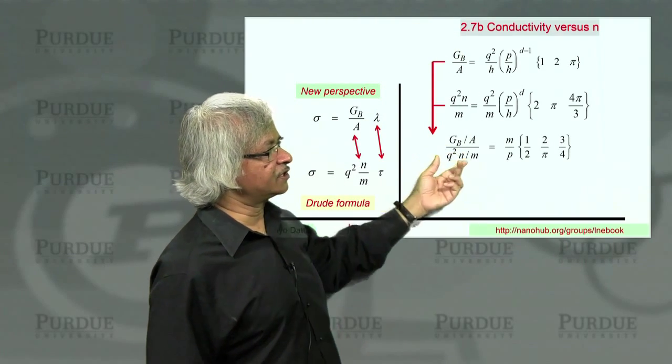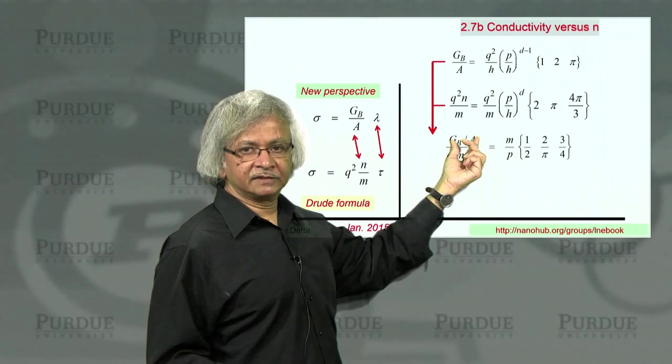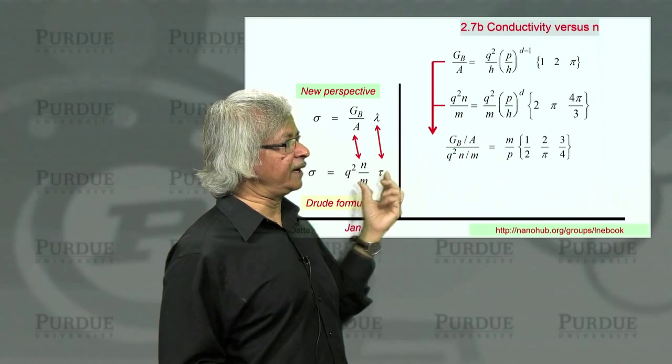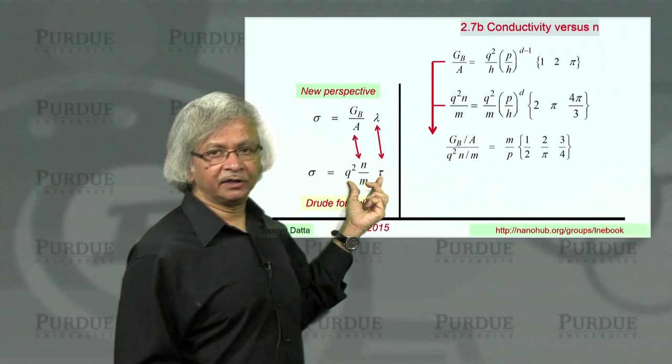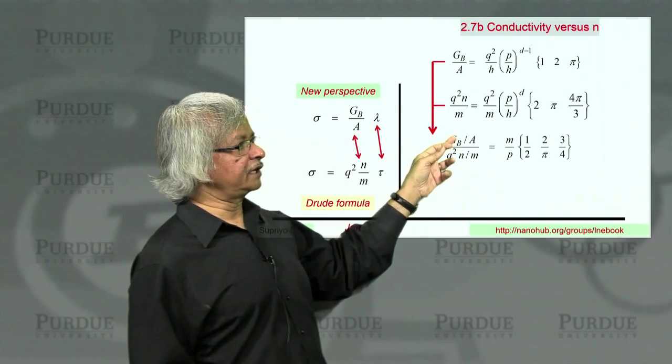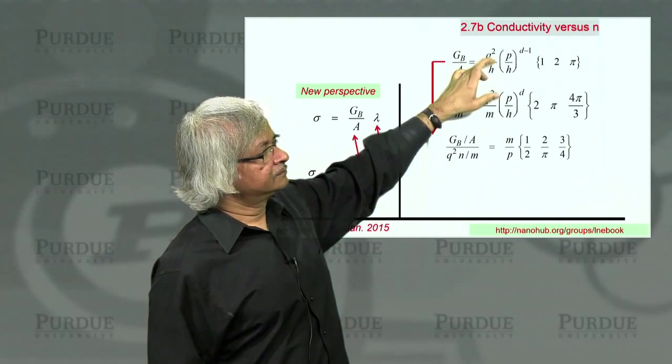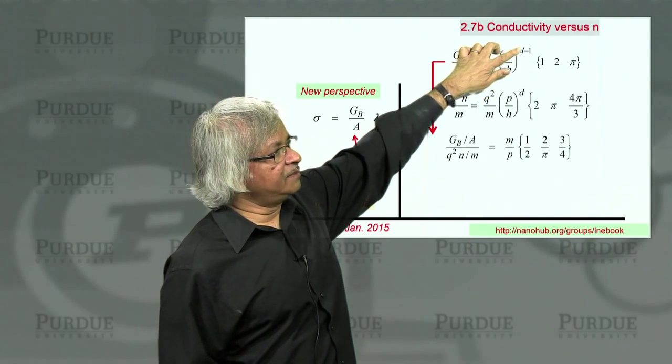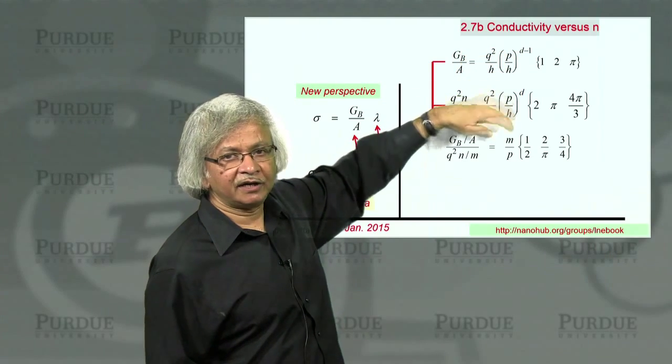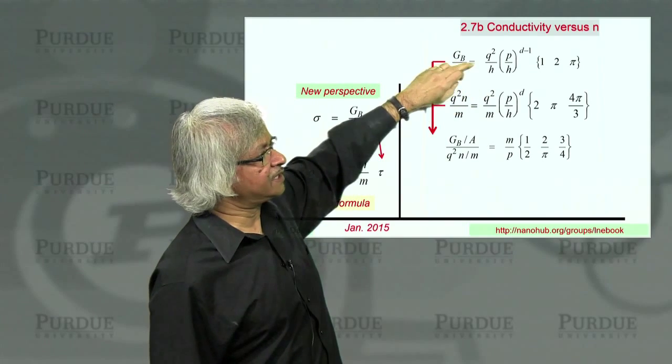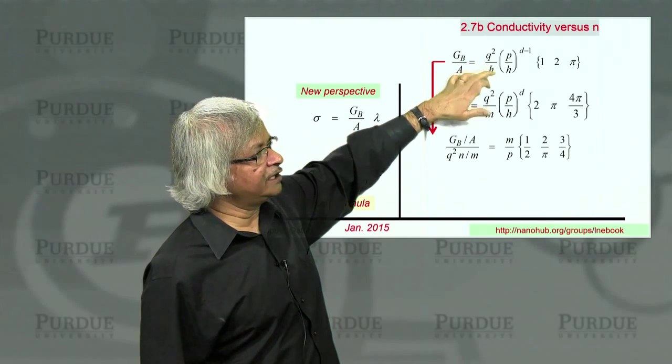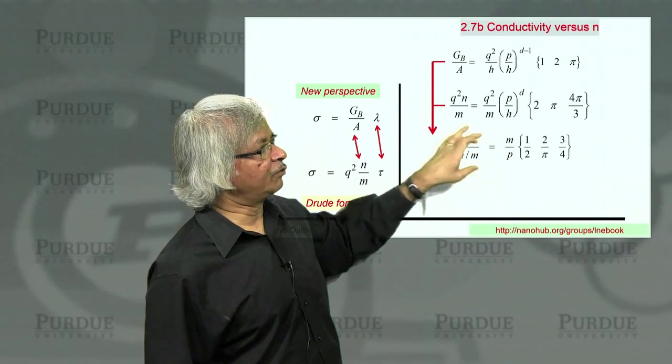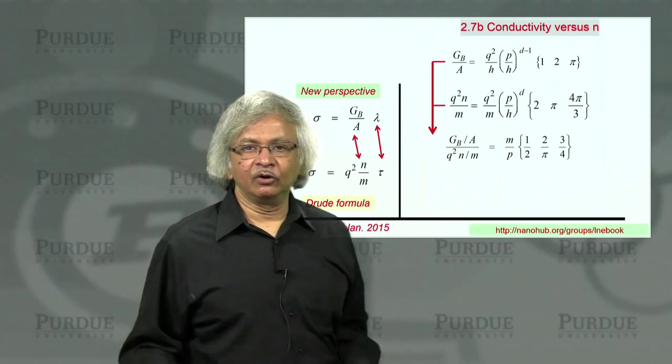The ballistic conductance, this is the electron density, and divide one by the other. So what we have here is the ratio. GB over A, that's the ballistic conductance per unit area, divided by this q square n over m. That's that quantity appearing in the Drude formula. So you look at the ratio of the two, and you'll notice q squared cancels out. p over h, d minus 1, this is p over h, d. So you kind of have a p over h left, except that there's a h there, so the h cancels out. So finally, you'll see what is left is 1 p and that m.